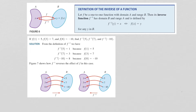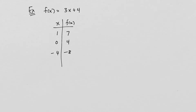The inverse function simply reverses the process of whatever the function did. To illustrate this, consider f of x equals 3x plus 4. I've made a small table of values: when x is 1, y is 7; when x is 0, y is 4; and when x is negative 4, y is negative 8. I'd like to illustrate the inverse function that would reverse all of these values.